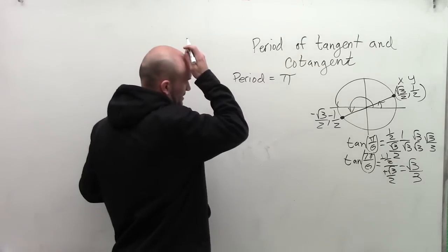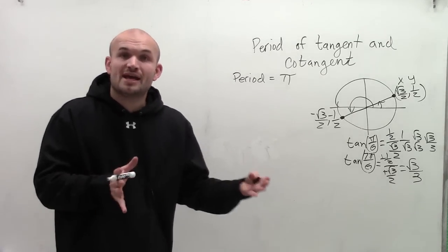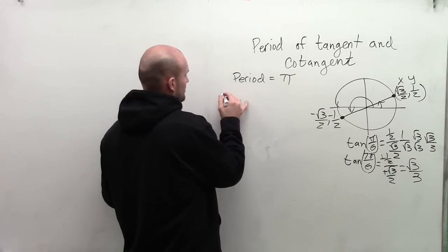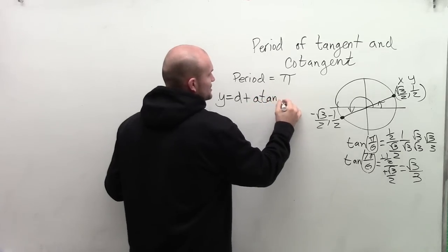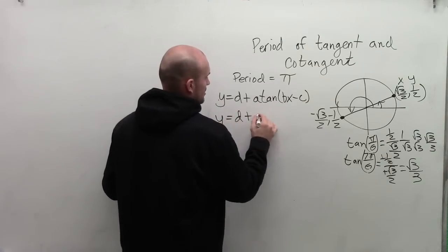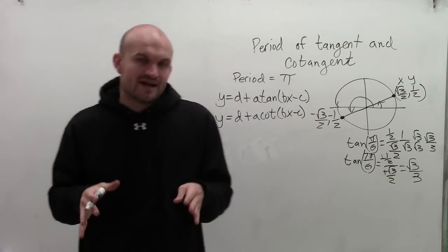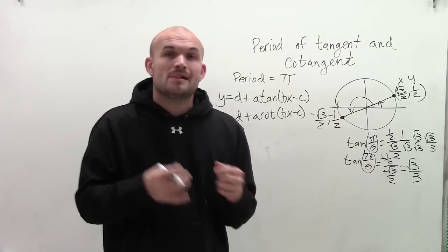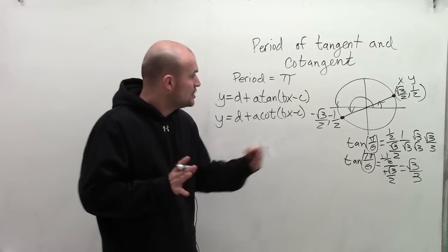Now, let's take a look at the formula and see how our period might change or be affected. So if I was going to take a look at my general formula, I could have y equals d plus a tangent of bx minus c and y equals d plus a cotangent of bx minus c. Now, if you remember, when we were finding the period for sine and cosine, we always did the period was 2 pi divided by b, where b was your coefficient of your x value. And that affected the period if it was stretched or condensed.